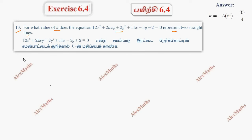It is a condition. So ABC plus 2FGH minus AF squared minus BG squared minus CH squared equal to 0.